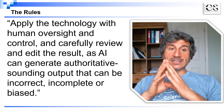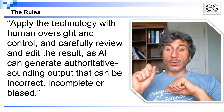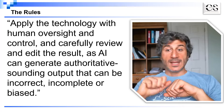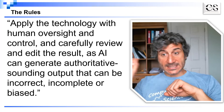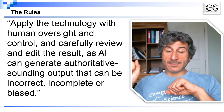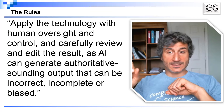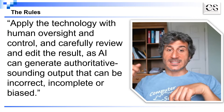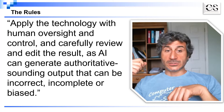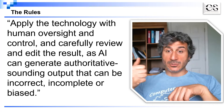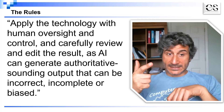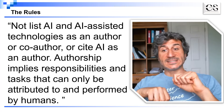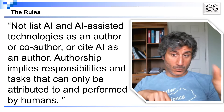The second rule states that we need to apply this technology always with human oversight and control. Whatever is given as output by this model needs to be checked by a human, because we know that AI-assisted tools can generate text that sounds authoritative but can be incorrect, incomplete, and even biased.